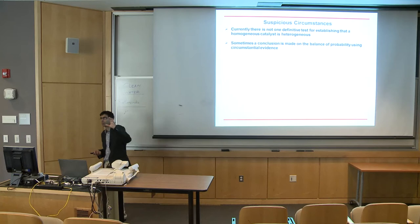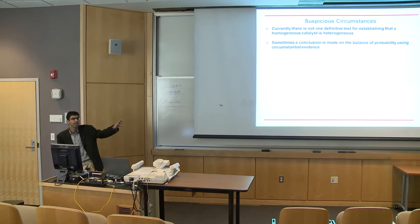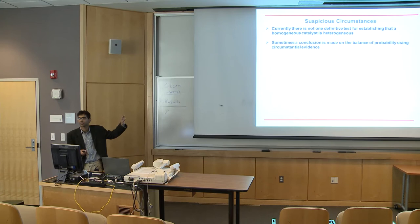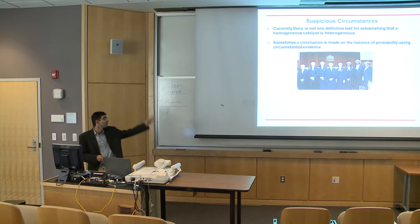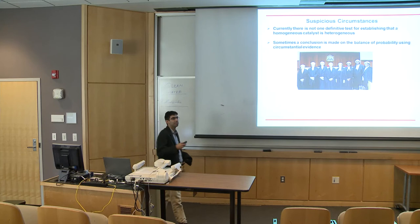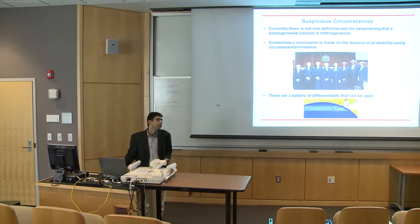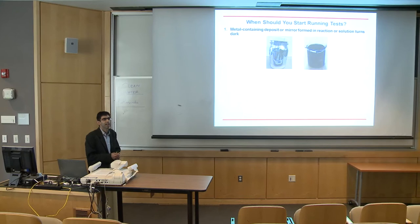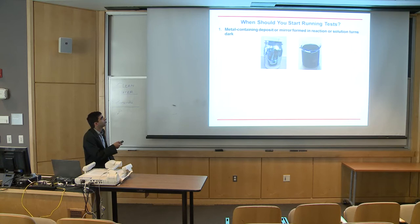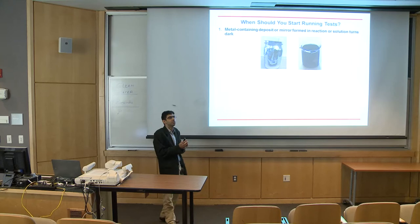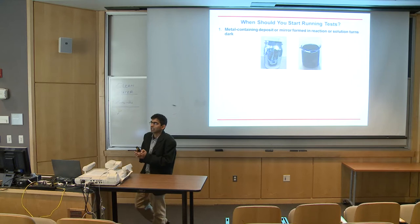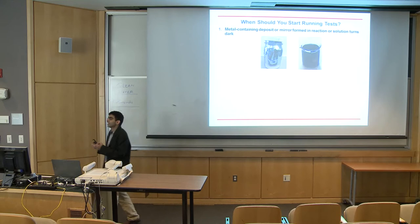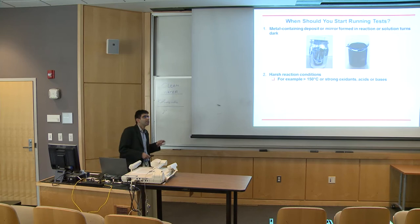In America you have reasonable doubt in the criminal judicial system — if we use that as our criteria for homogeneous versus heterogeneous, you're basically never going to make a decision. You need to make a decision on the balance of probability. You should do the tests if at the end of your reaction you see metal coming out of the reaction mixture or a very dark solution — typically in palladium chemistry, where palladium compounds tend to be yellow. A dark solution indicates you're probably forming palladium black.